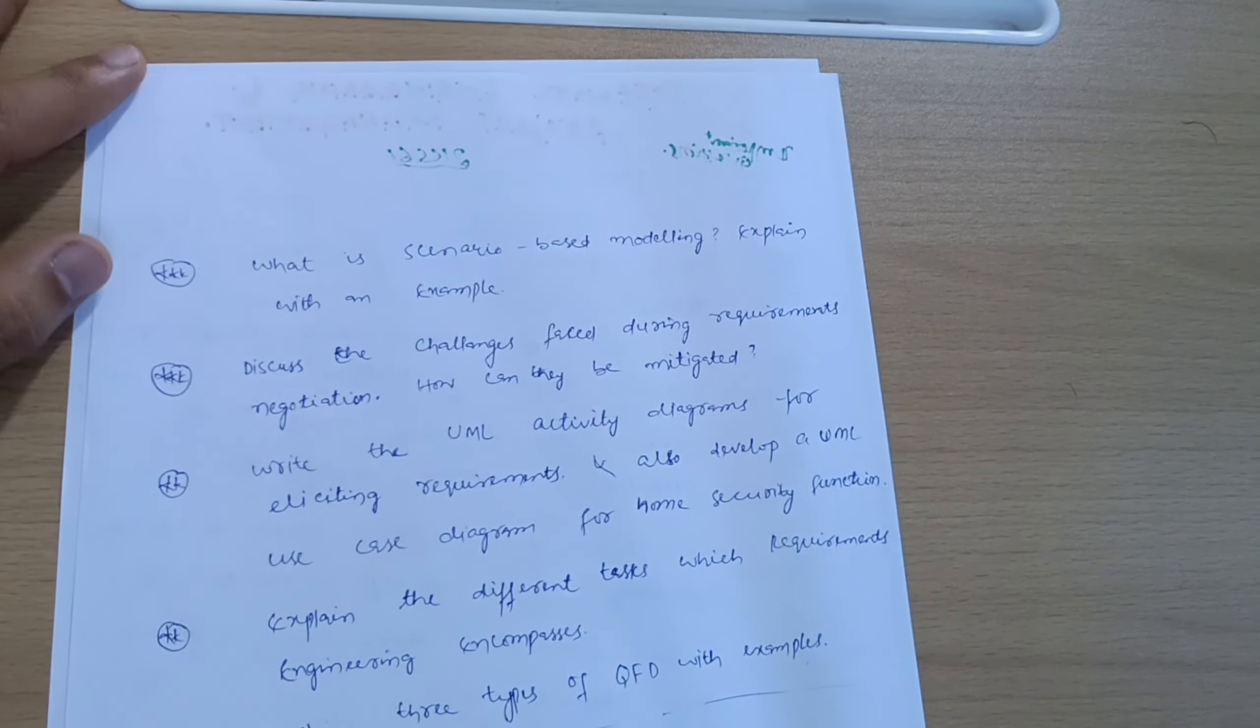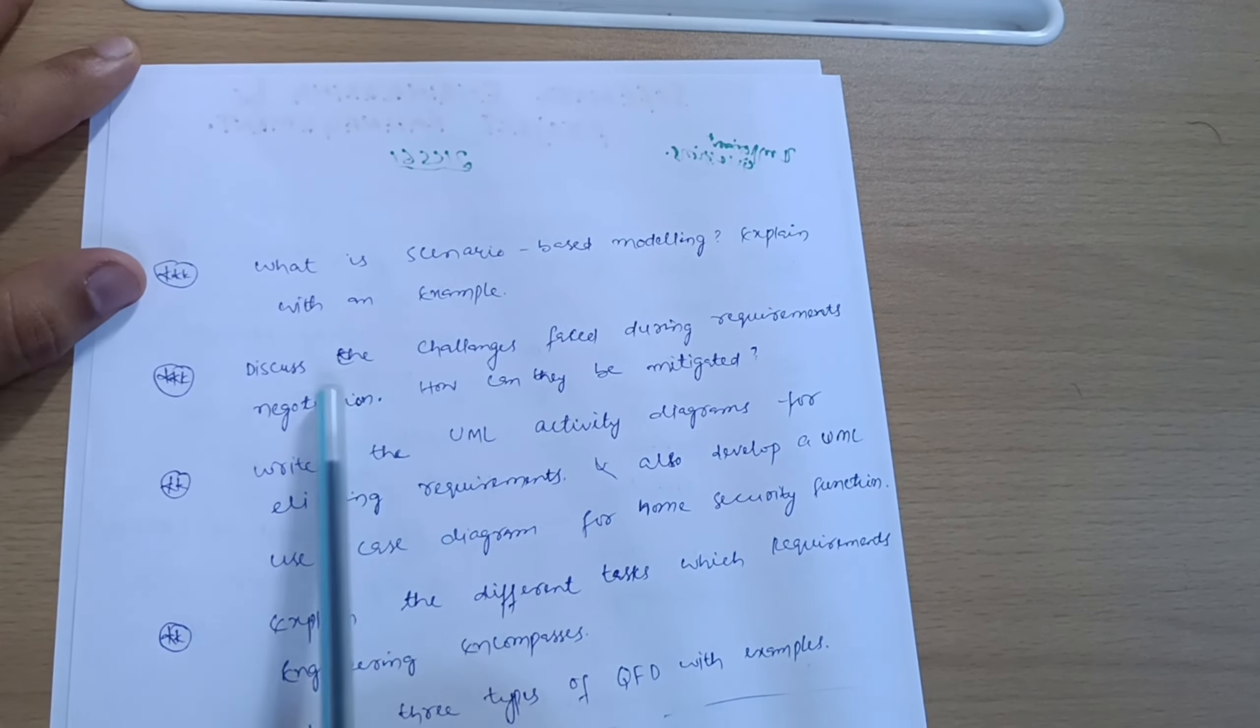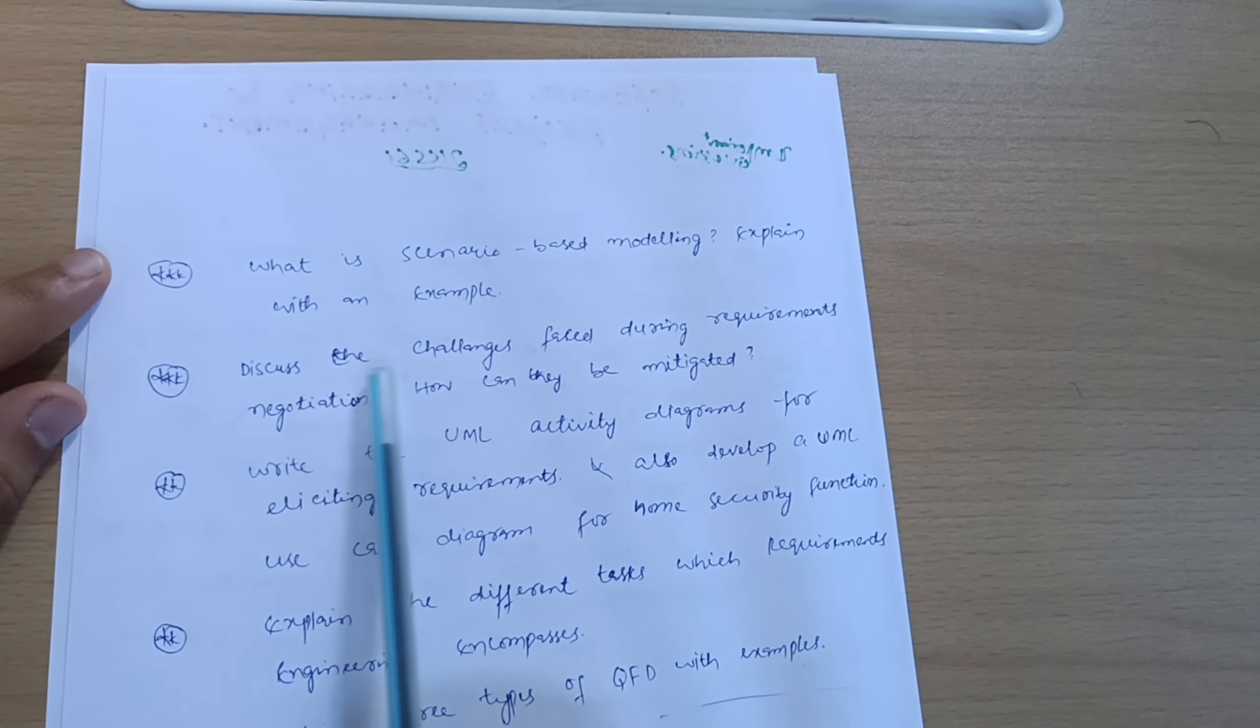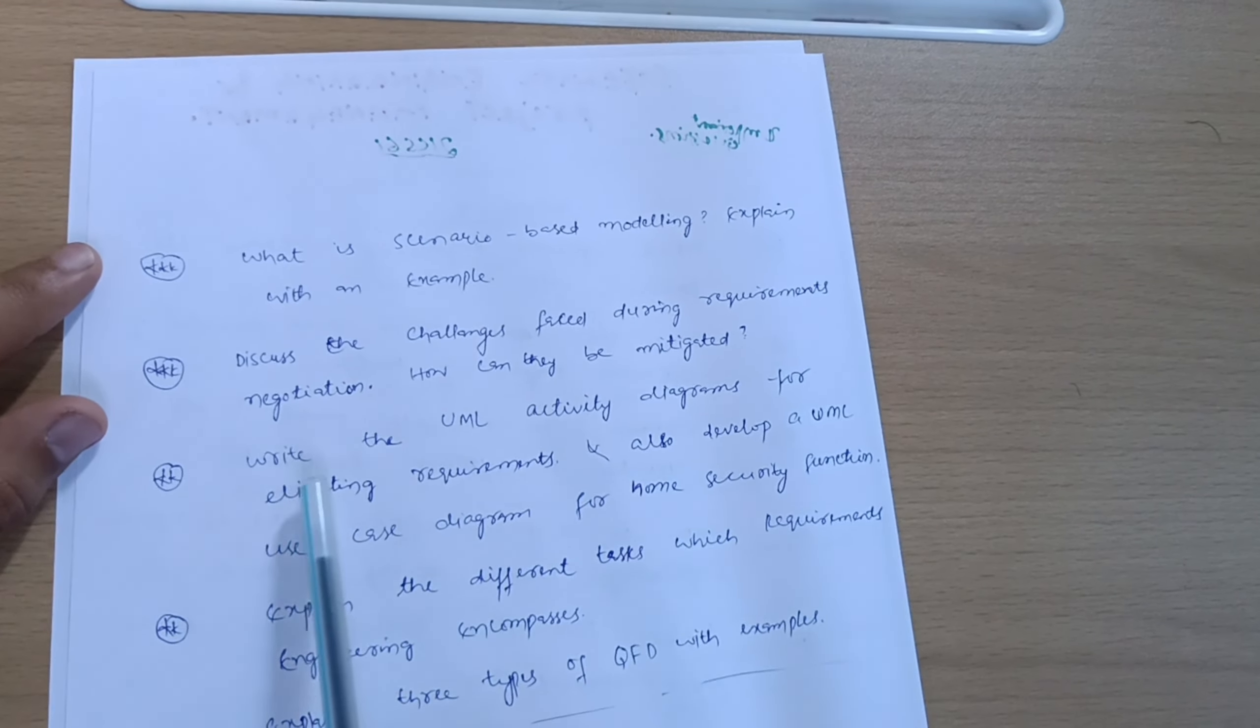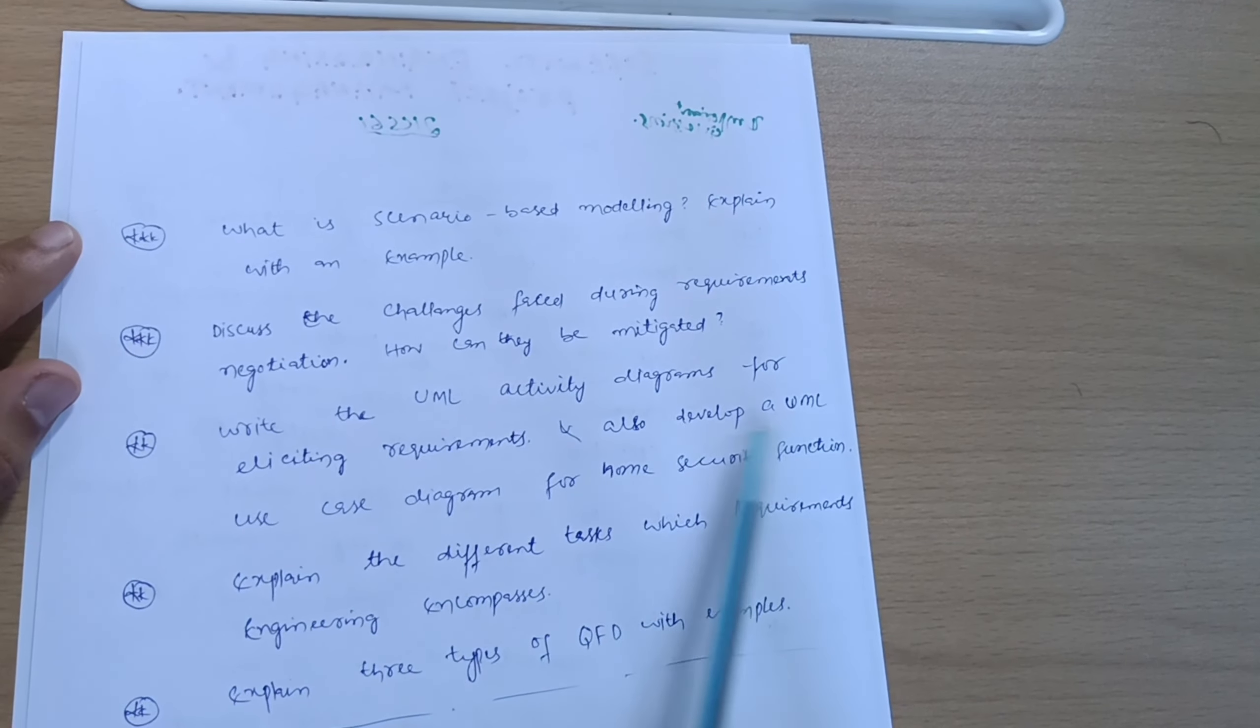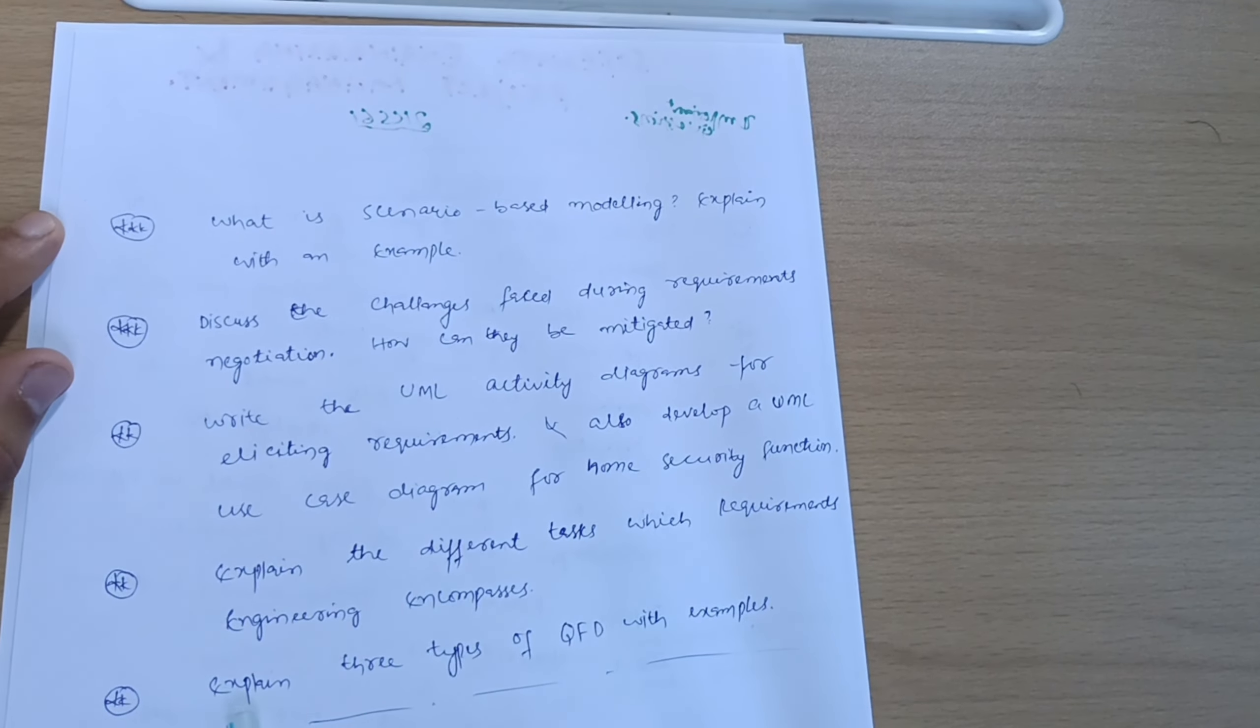What is scenario-based modeling? Explain with an example. Discuss the challenges faced during requirements negotiation and how they can be mitigated. Write UML activity diagrams for eliciting requirements. Develop a UML use case diagram for home security function. Explain the different tasks which requirements engineering encompasses.